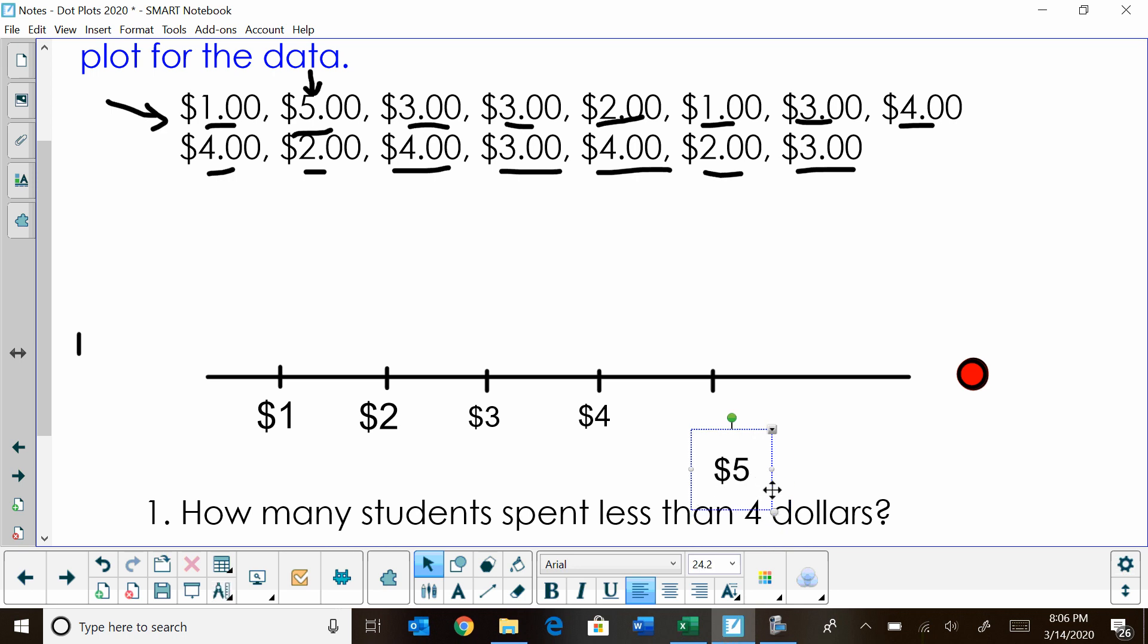So $4, and then the last one will be $5. Now I've got to take and put a dot for each one of these values, and we're going to stack them up evenly. The first student spent $1. The second student spent $5. The third student spent $3. The fourth student also spent $3, so now I'm just going to stack it right on top. The next student spent $2. Notice I'm trying to line these up, so the first ones are all even. The next student spent $1. The next student spent $3.